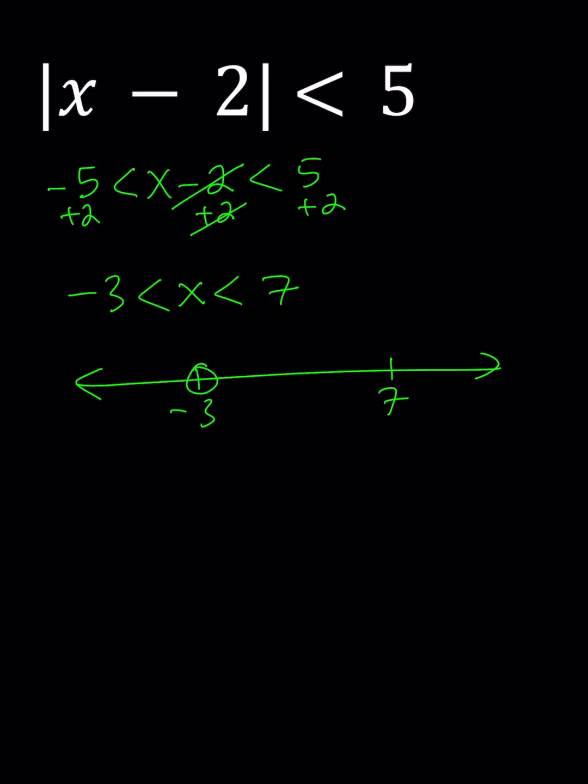They would both be open dots, and since x needs to be in between, we're going to go ahead and shade this region, and that will be the graphical representation of the solution of this absolute value inequality.